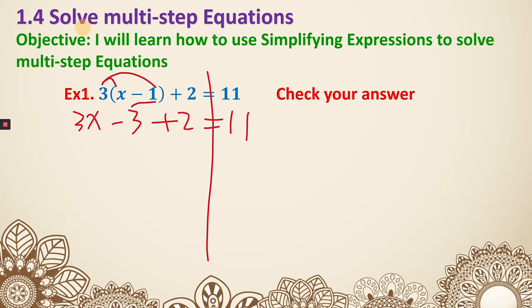Now I can see I can combine like terms, because I have a negative 3 and a plus 2. That becomes 3x minus 1.